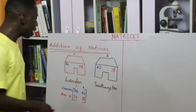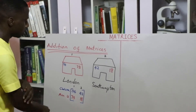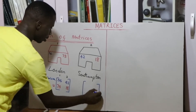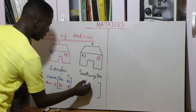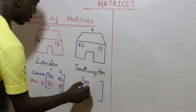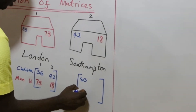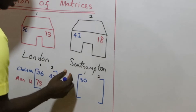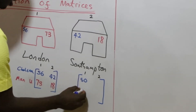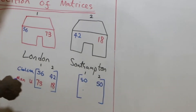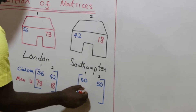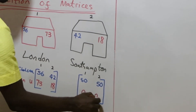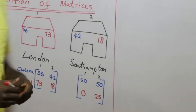Now, what if your supplier brings 50 Chelsea jerseys to your store one and 50 Chelsea jerseys to your store two? And the supplier did not bring any Manchester United jerseys to store one, but brought 25 Manchester United jerseys to store two.